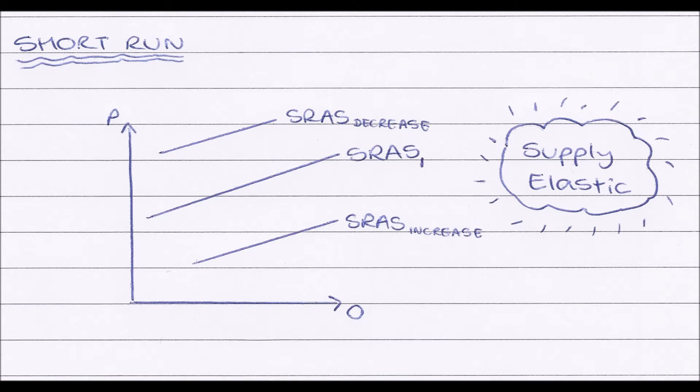Now, aggregate supply is slightly different in the short run as it is in the long run. So firstly, we're going to analyze aggregate supply in the short run. And this is our aggregate supply curve here.